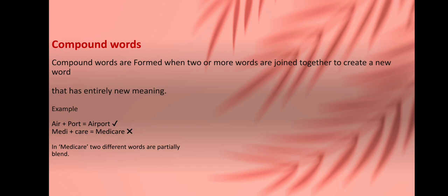Now first, compound words. Compound words are formed when two or more words are joined together to create a new word that has an entirely new meaning. For example, air plus port equals airport.